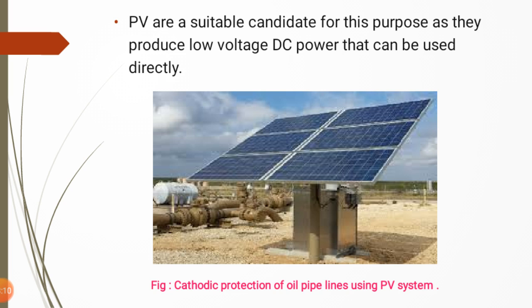As shown in the figure, the blue part represents the photovoltaic array. In the background there are oil pipelines made of metallic material. When this metal is in contact with water, corrosion occurs. The solar panel generates a small DC voltage, which prevents the loss of ions from the metal surface, thus stopping the corrosion process through the electrolytic mechanism.